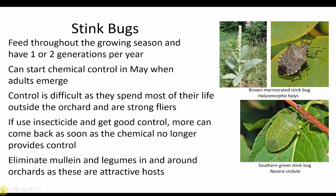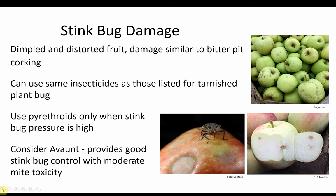There are several different species of stink bugs that can be problematic in orchards, especially the brown marmorated stink bug and the green stink bug, which have up to two generations per year. Usually products are applied in May when the adults emerge. These pests are difficult to control as they fly in and out of orchards. Mullein weed and legumes around orchards attract stink bugs to the area. Stink bugs cause dimpled fruit with necrotic tissue in the flesh. Use pyrethroids to control stink bugs only when they are problematic. Avaunt is a product that provides good stink bug control with only moderate mite toxicity.